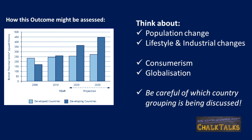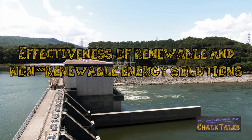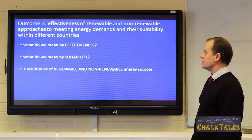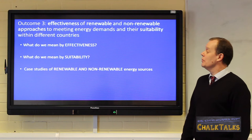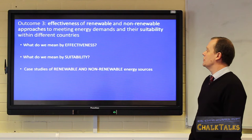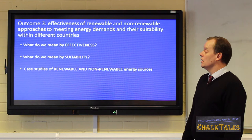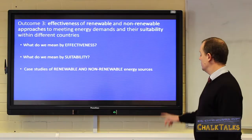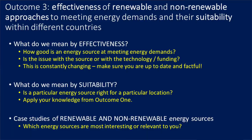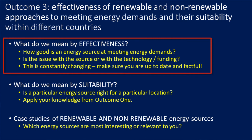When answering these questions, also be careful to discuss the correct country grouping. Outcome three looks at the effectiveness of renewable and non-renewable approaches to meeting energy demands and their suitability within different countries. This means we have to understand what is meant by effectiveness and suitability, and we also have to have a case study of both renewable energy and non-renewable energy. When we think about effectiveness, we are asking how good is an energy source at meeting our energy demands — but if there are issues, is the issue with the source or with the technology and funding of that technology?